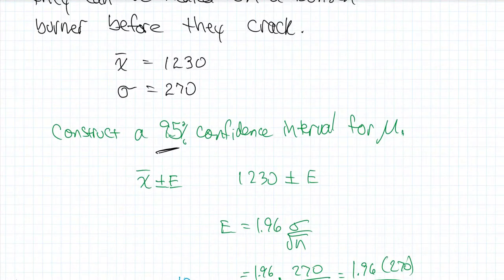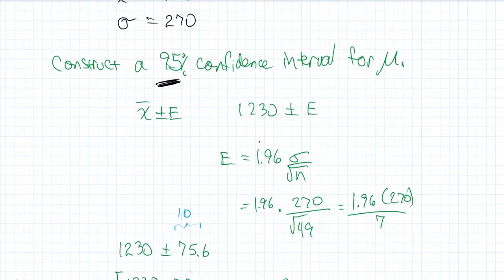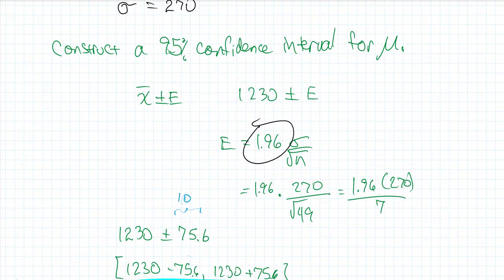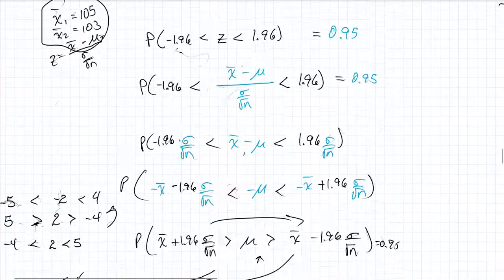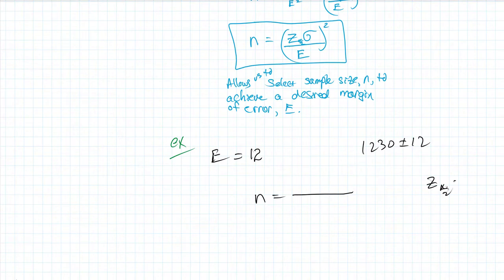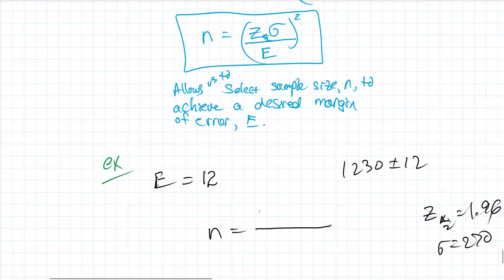So let's grab some of the specifics for that problem. We started out with a 95% confidence. So I know that that z value was 1.96. So z alpha over 2 is 1.96. And sigma was 270. So 1.96, and sigma is 270. So if I plug those values in, we have 1.96, and sigma is 270, and the margin there that we're interested in is 12.